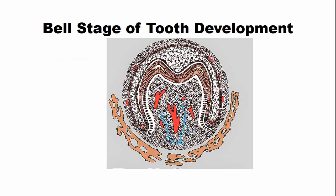This is the picture of Bell's stage of tooth development. In this picture you can see different cells: the outer enamel epithelium, blood vessels, stellate reticulum cells, stratum intermedium, and ameloblasts. These cells just below the cusp tips are the odontoblasts, and you can see this orange color — this is the newly formed dentine.